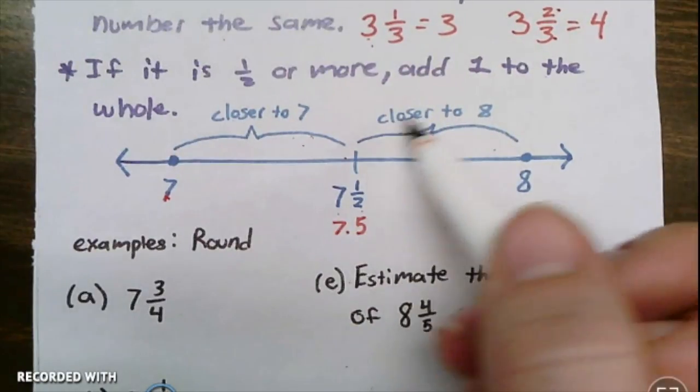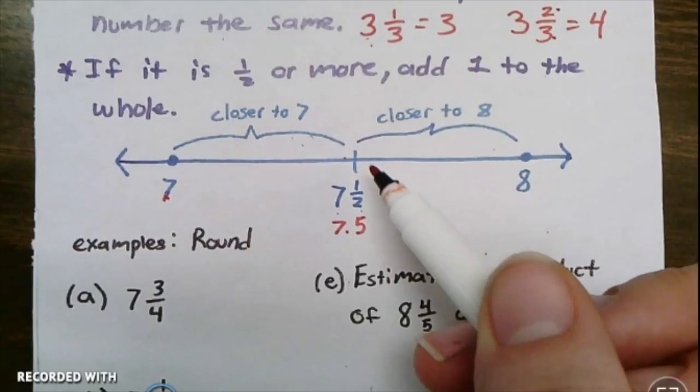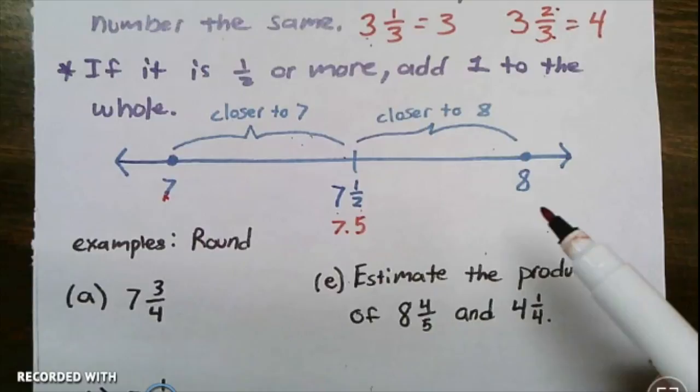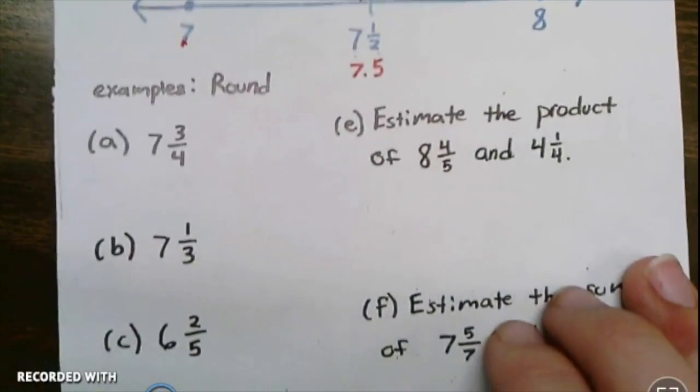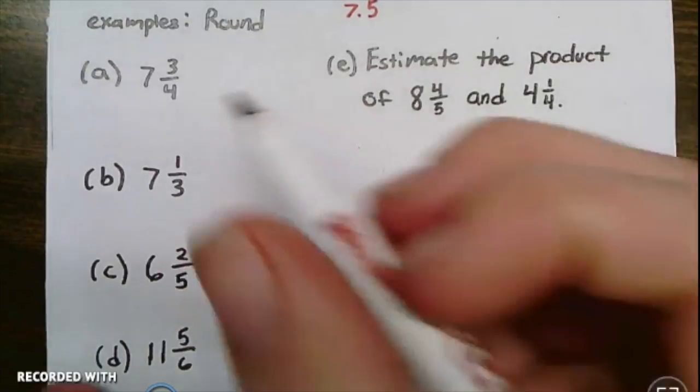Anything between seven and a half and eight are closer to eight. If I've got more than seven and a half, then it's closer to eight than it is to seven, so it's going to round up to eight. Let's jump right into the examples. The directions just say round. We're going to round to the nearest whole number.